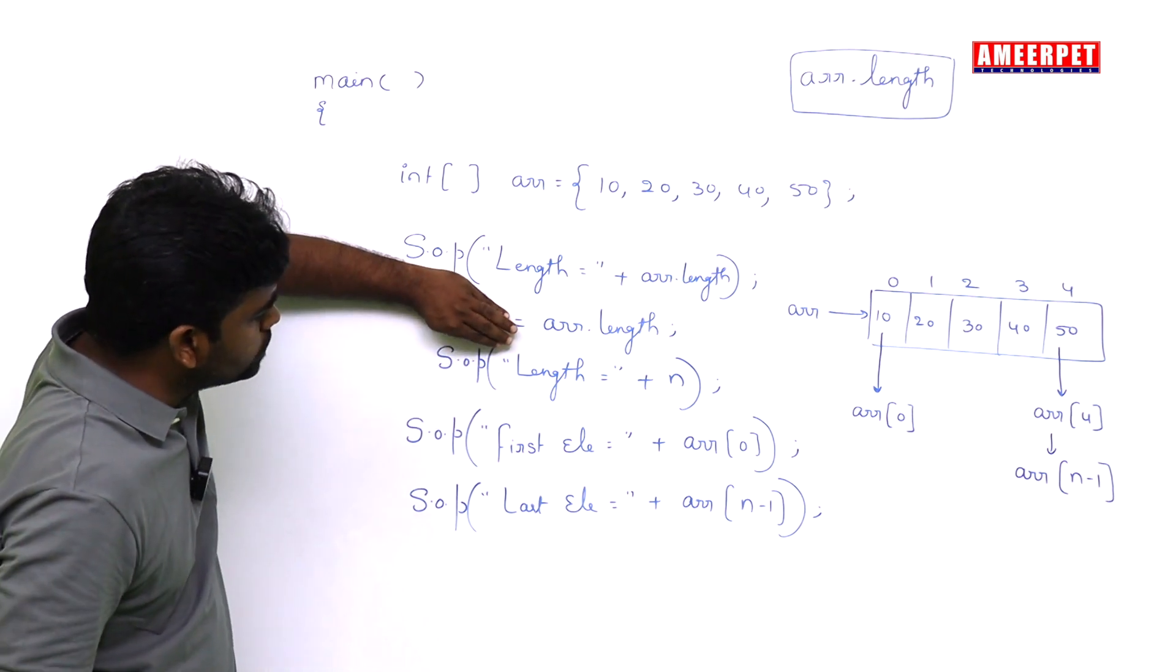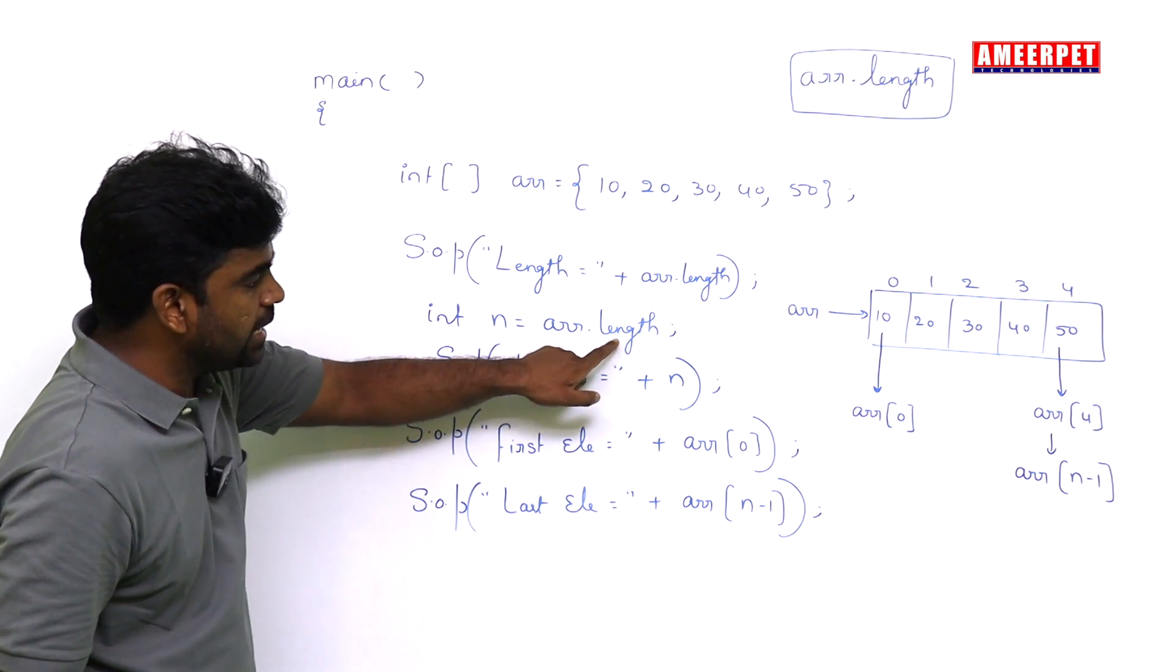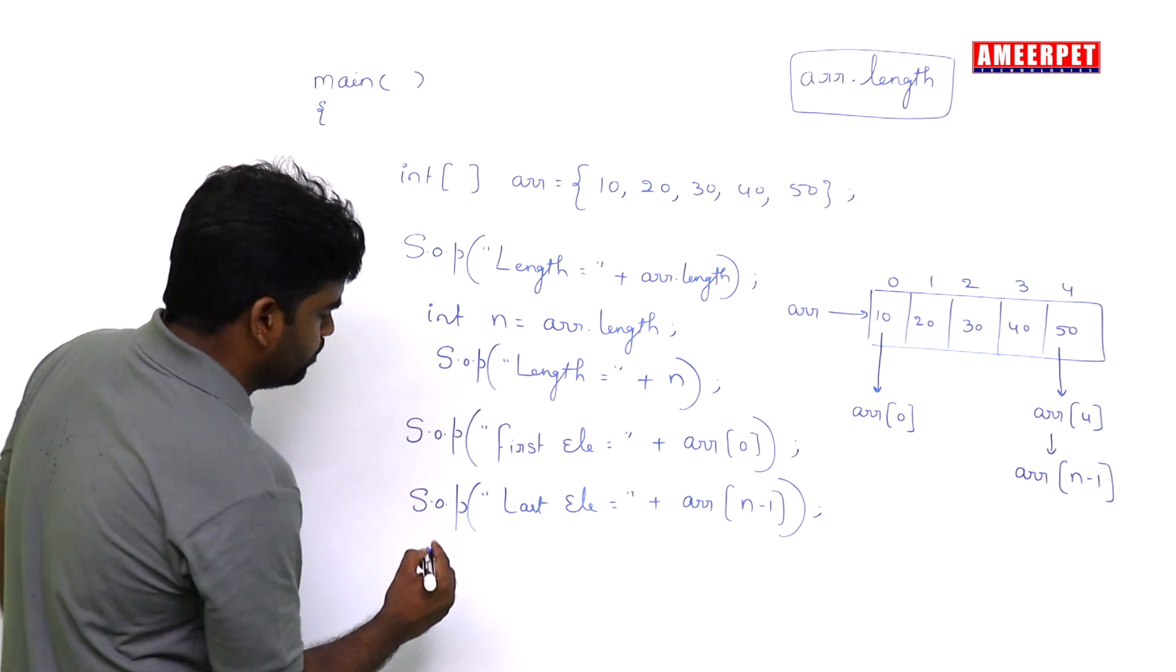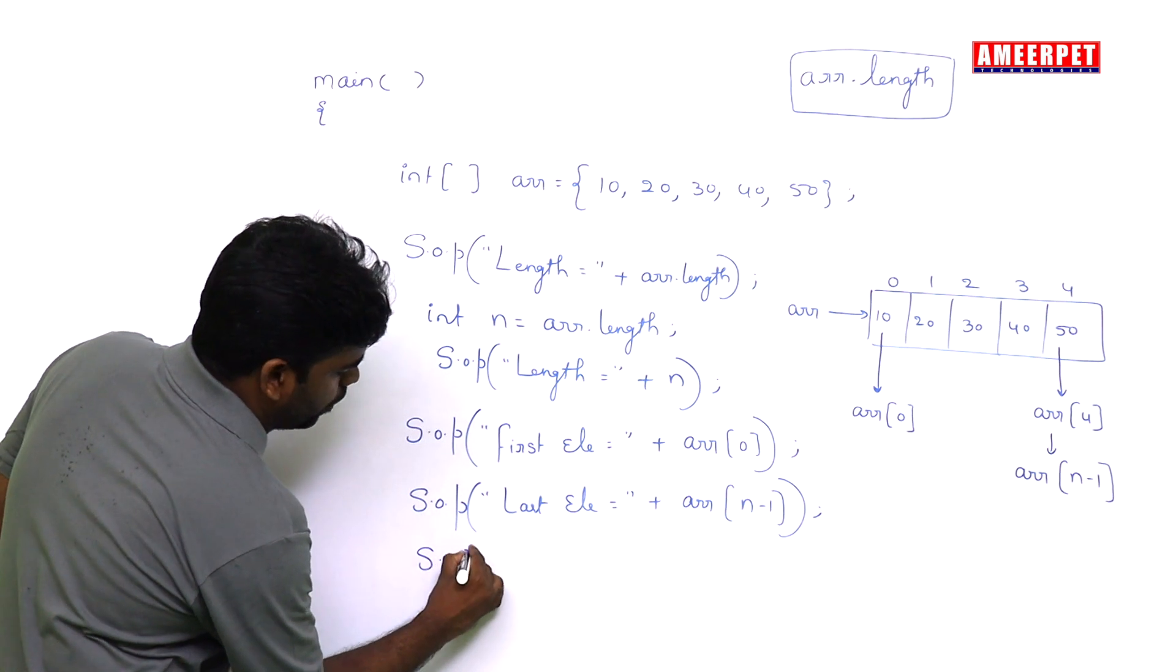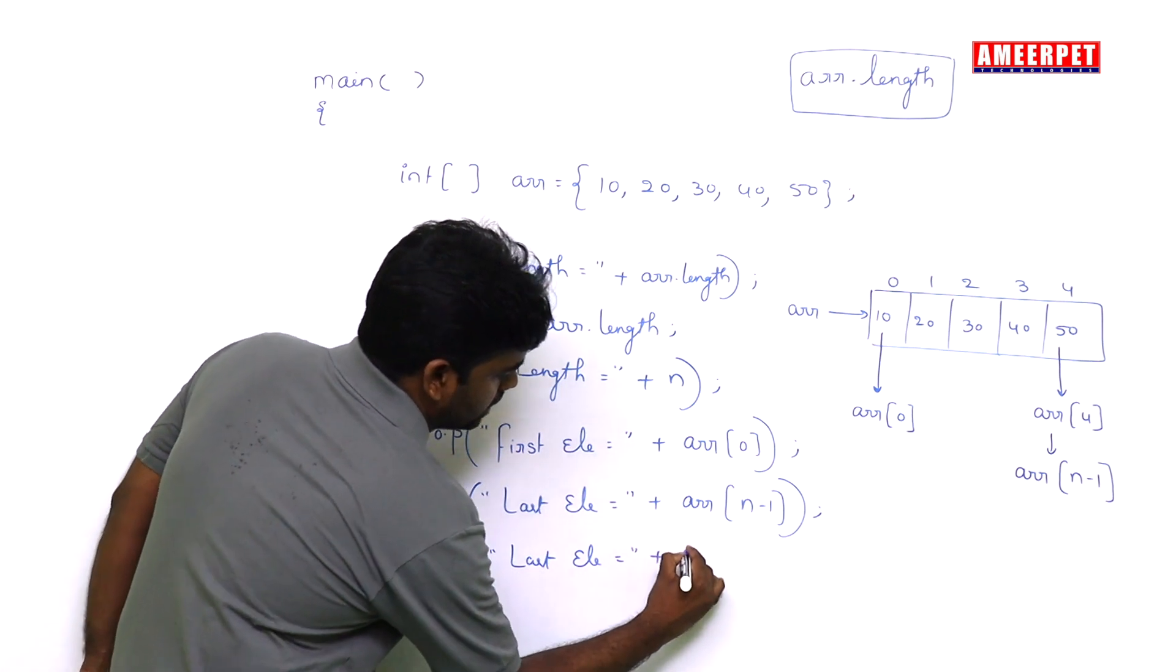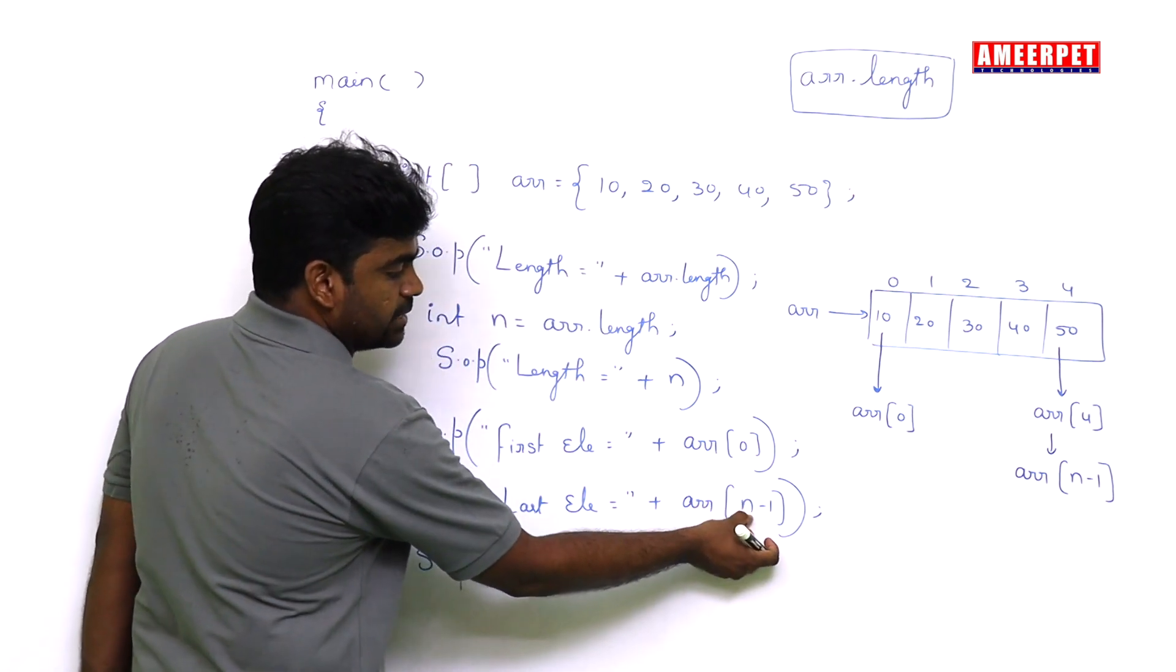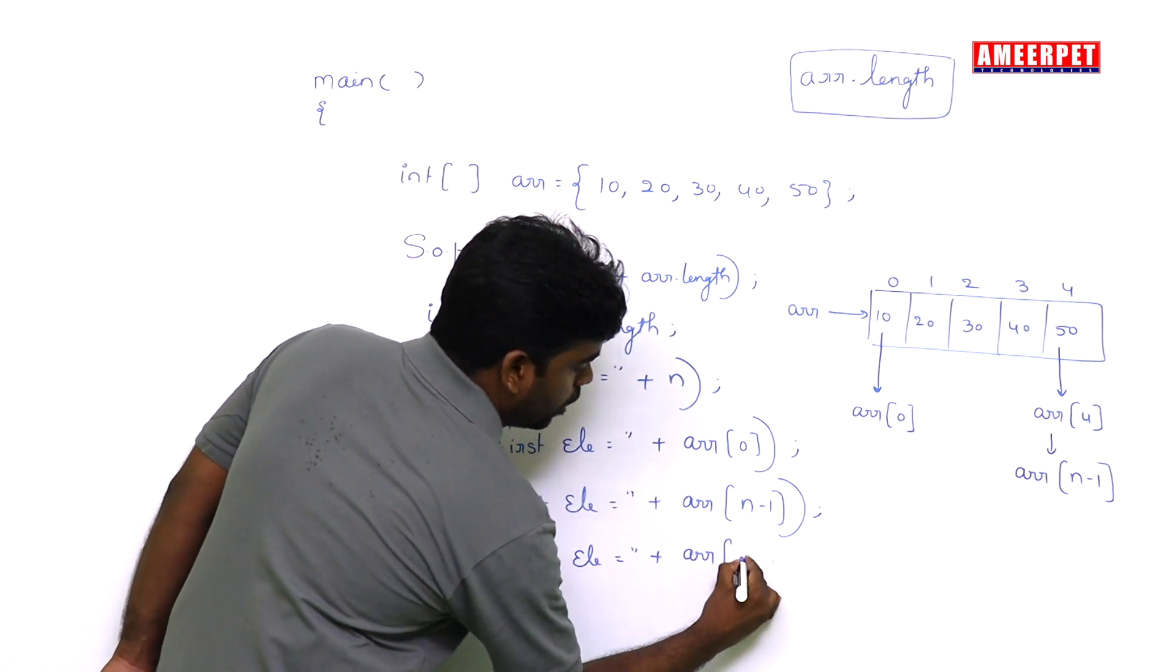Now, I don't want to use this n. In place of n, what can you write? Arr.length. Simple. System.out.println, the last element is arr of, in place of n, arr.length.